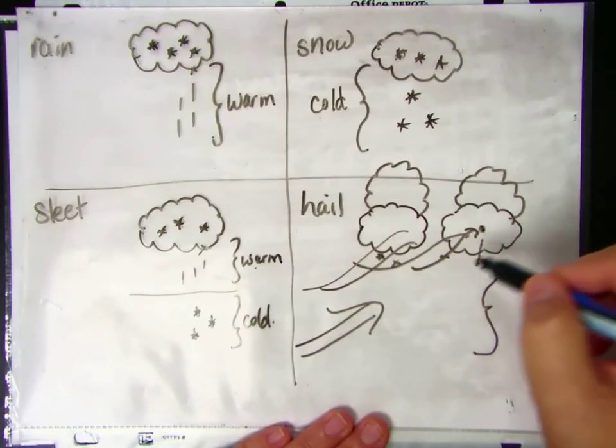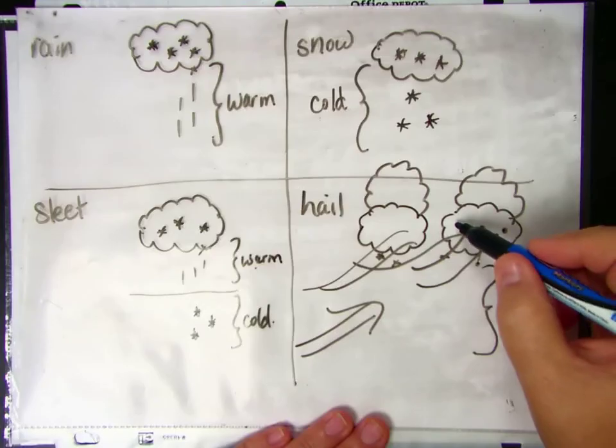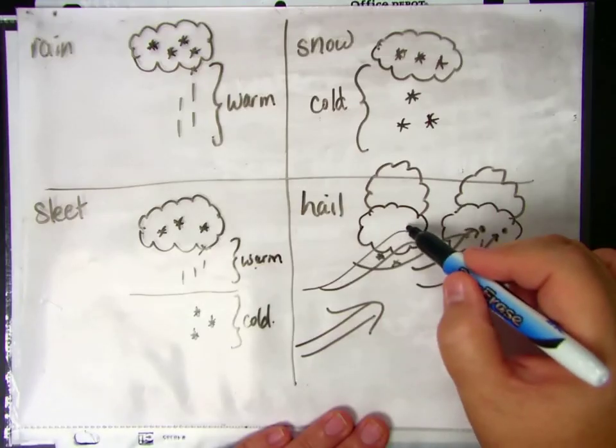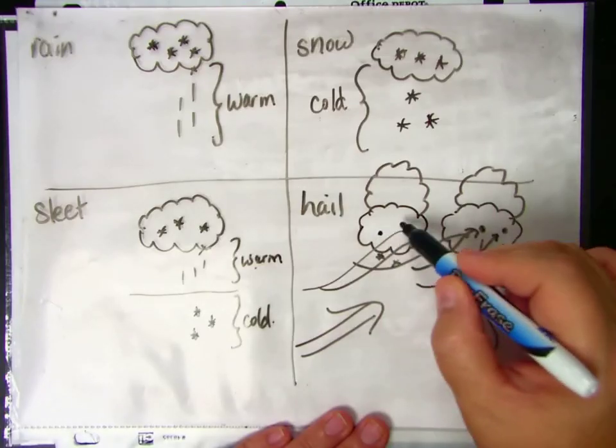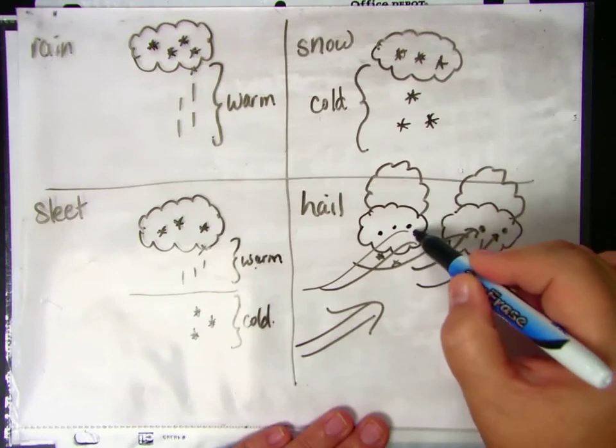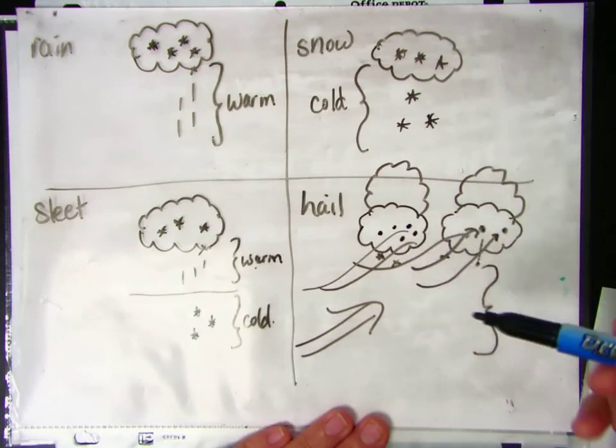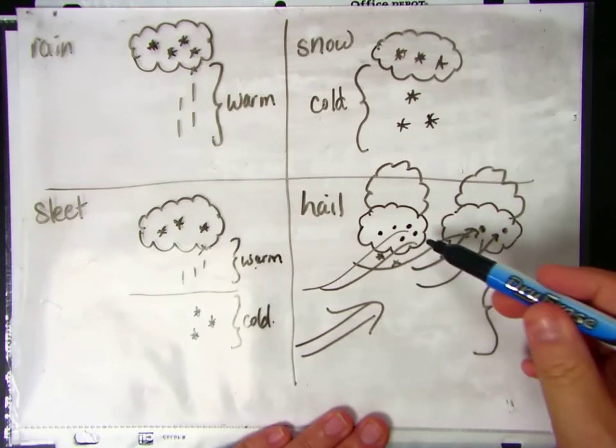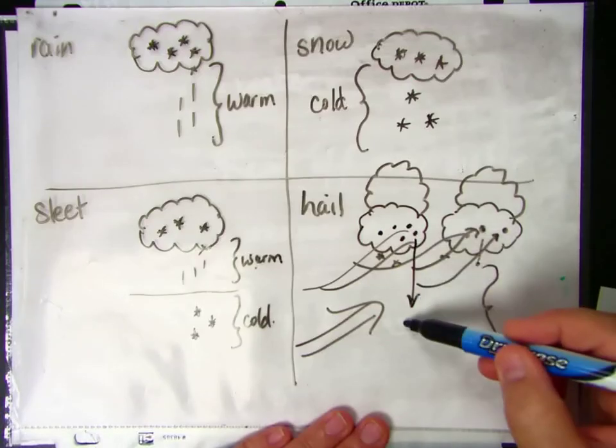And then that might drop and it might get pushed back up again and build up a layer. It continually gets pushed back up into the cloud, building up layer upon layer of ice, and the ice eventually will fall to the earth as hail.